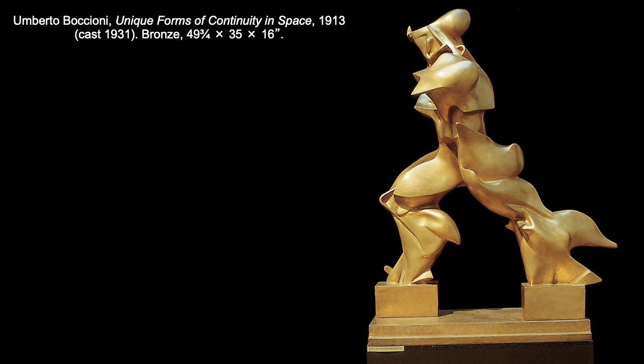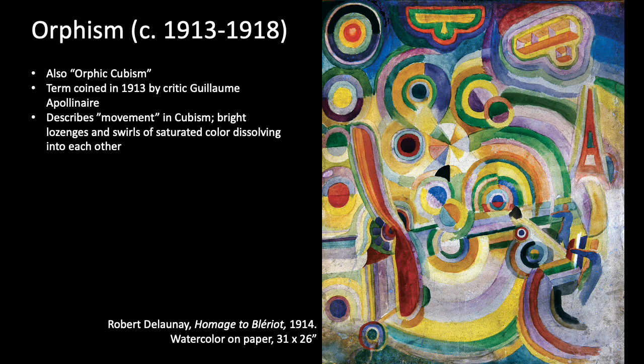Boccioni was another artist who enthusiastically supported the war, enlisting and later dying during his military service. In France, Cubism influenced Robert Delaunay and his Ukrainian-born wife Sonia Delaunay quite directly, but they took the nearly monochromatic static forms of Cubism in new directions, incorporating bright lozenges and swirls of highly saturated color. The art critic Guillaume Apollinaire labeled their works Orphism, after the ancient Greek poet Orpheus who had tamed wild beasts with his lute, implying that their art had a similar power.